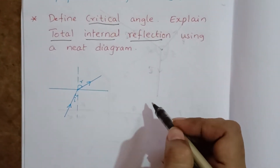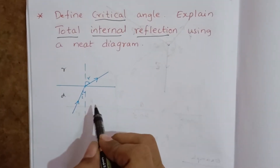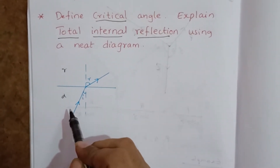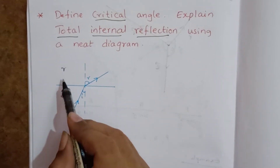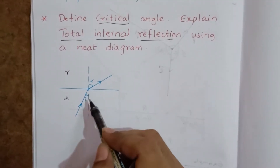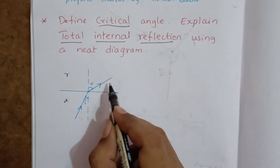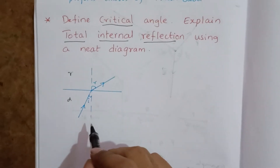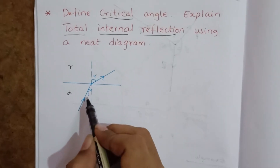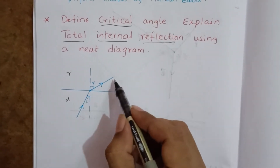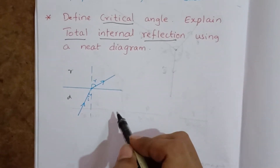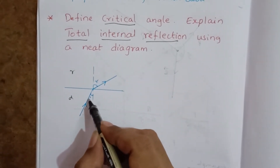When a light ray travels from a denser medium to a rarer medium, the refracted ray bends away from the normal. Now, if you increase the angle of incidence, the refracted ray comes closer towards the interface.